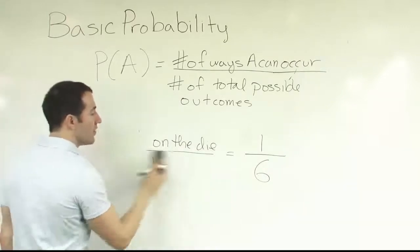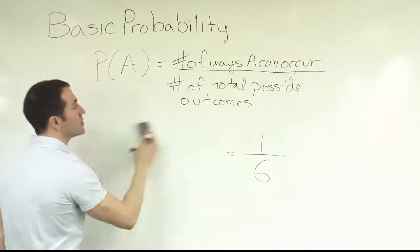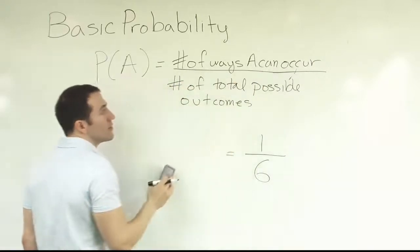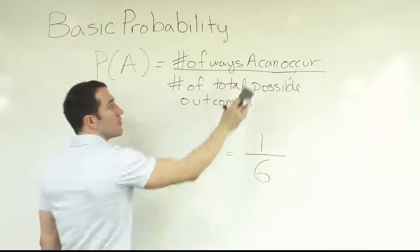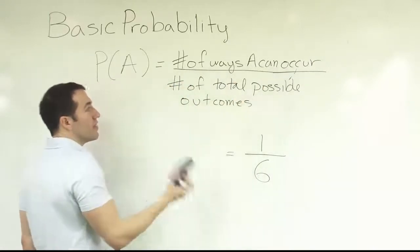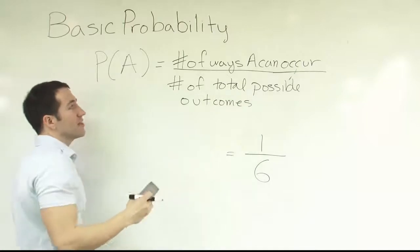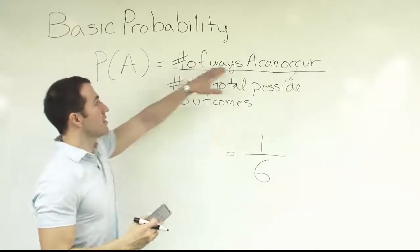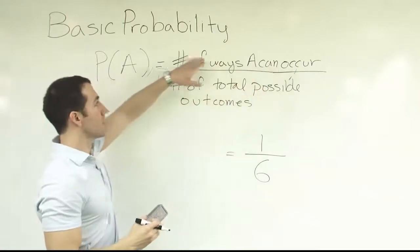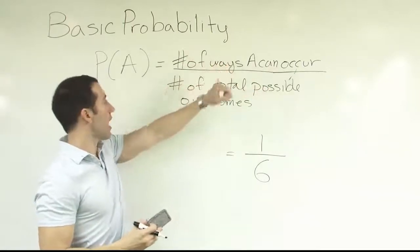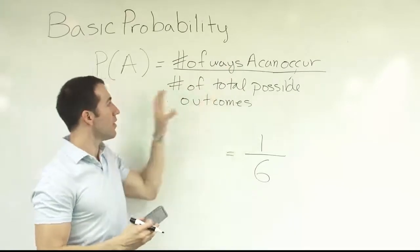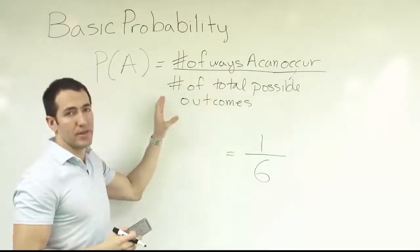The reason they call it the classical approach is because the structure implies that we can infer all of this in our heads. We can think about the die and say how many ways can a three occur, how many threes there are on a die, and how many total possible outcomes there are.